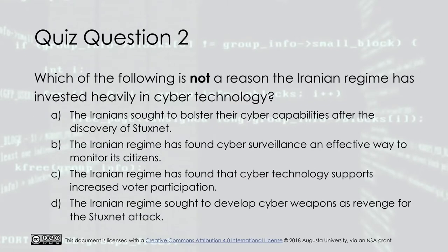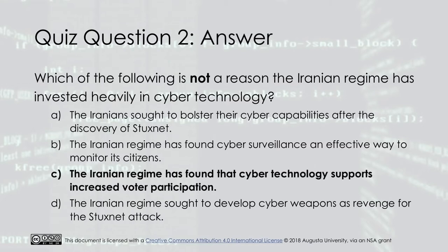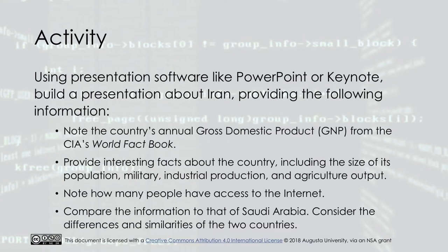Which of the following is not a reason the Iranian regime has invested heavily in cyber technology? A: The Iranians sought to bolster their cyber capabilities after the discovery of Stuxnet. B: The Iranian regime has found cyber surveillance an effective way to monitor its citizens. C: The Iranian regime has found that cyber technology supports increased voter participation.